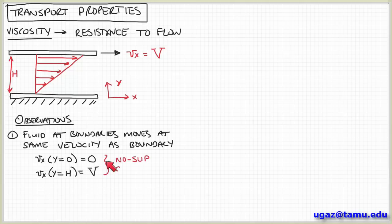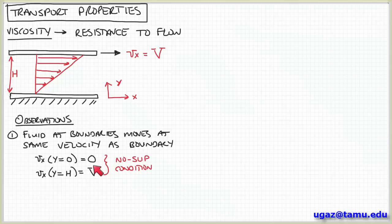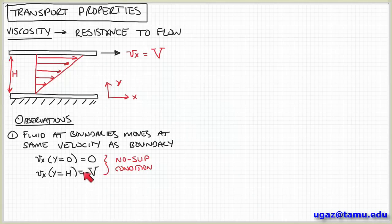This is what we call the no-slip condition. It seems intuitive, but there are details about special kinds of fluids or special kinds of flows where this boundary condition may not be 100% valid — there's even some controversy about that today. But for the purposes of this course, we can assume the no-slip boundary condition is valid. So at these two boundaries, the fluid is moving at the same velocity as the boundary — the atoms or molecules right adjacent to the boundary are moving at the same velocity as the boundary.